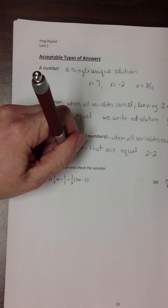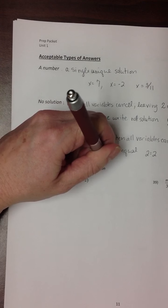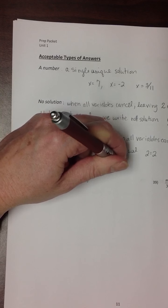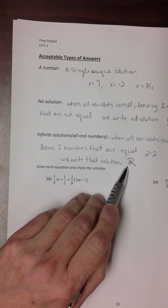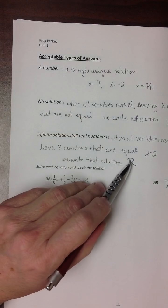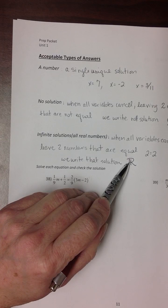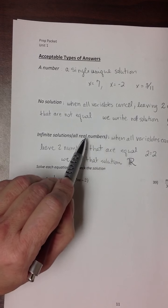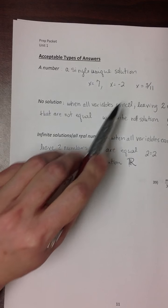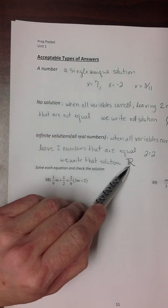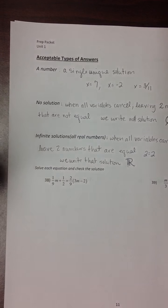We write that solution using a symbol—a capital letter R with two bars in the front. That's the symbol we use to represent all real numbers. Any fraction, any decimal, any number with a sign, any whole number put in place of the variable in that equation would end up with an answer where things are equal.